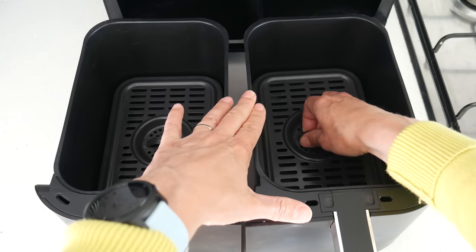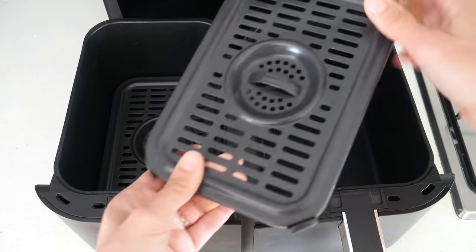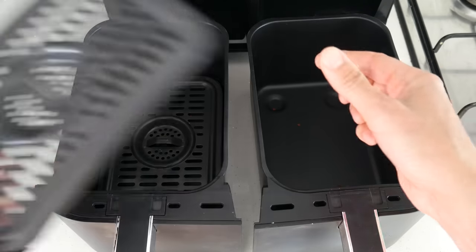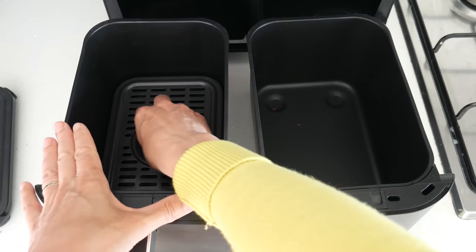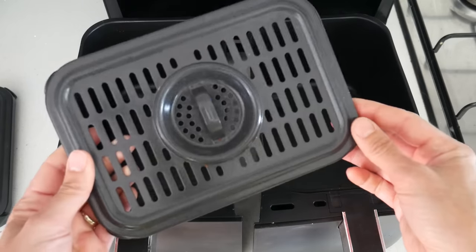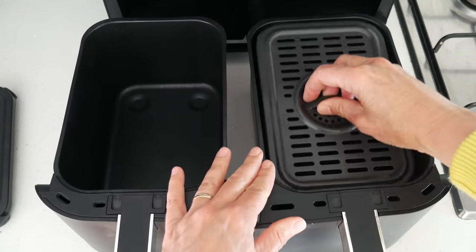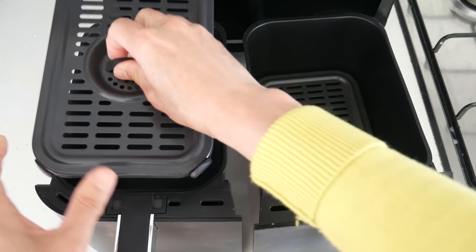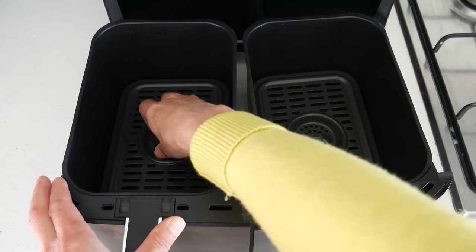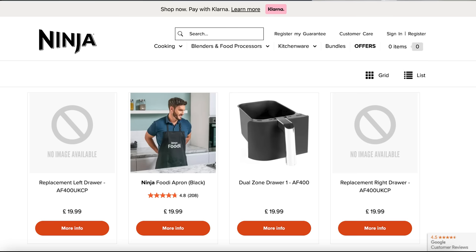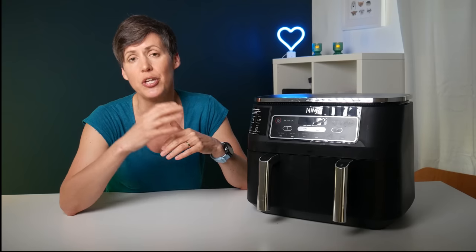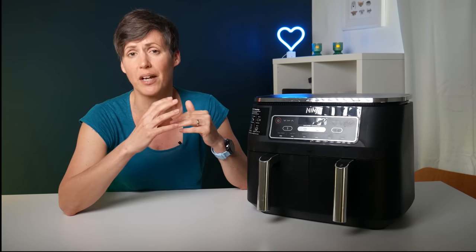Inside those drawers are two of what Ninja refers to as crisper plates. These crisper plates are exactly the same size and fit into either drawer so you don't need to remember which one goes in which drawer. You can swap them over if you wish and this is a really nice feature as well. Ninja actually sells replacements of the drawers and the crisper plates on their website and they're not horrendously expensive. So if for any reason they get damaged you can buy replacements which is something I always like to see.